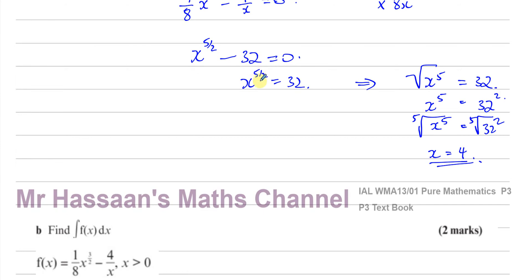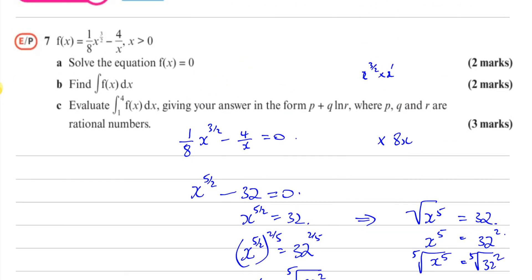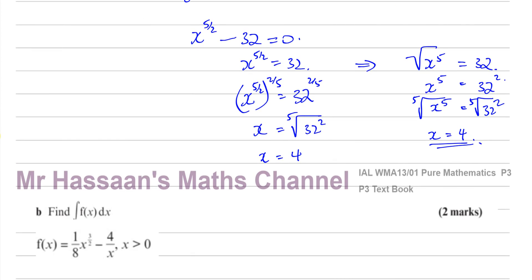Alternatively, to remove the power of 5 over 2, raise both sides to the power of 2 over 5 — the reciprocal — so the powers multiply to give x to the power of 1. That means x equals 32 to the power of 2 over 5, which means the 5th root of 32 squared. The 5th root of 32 is 2, and 2 squared is 4. So x equals 4, confirming the answer for part a.